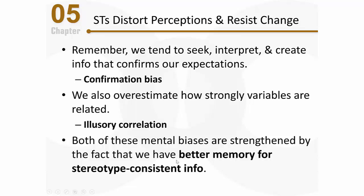Both of these mental biases — confirmation bias and illusory correlation — are strengthened by the fact that we tend to have better memory for stereotype-consistent information. That makes sense because stereotype-consistent information confirms our existing, sometimes biased understanding of how the world works. We are motivated to seek out and interpret information that confirms the beliefs we already hold.